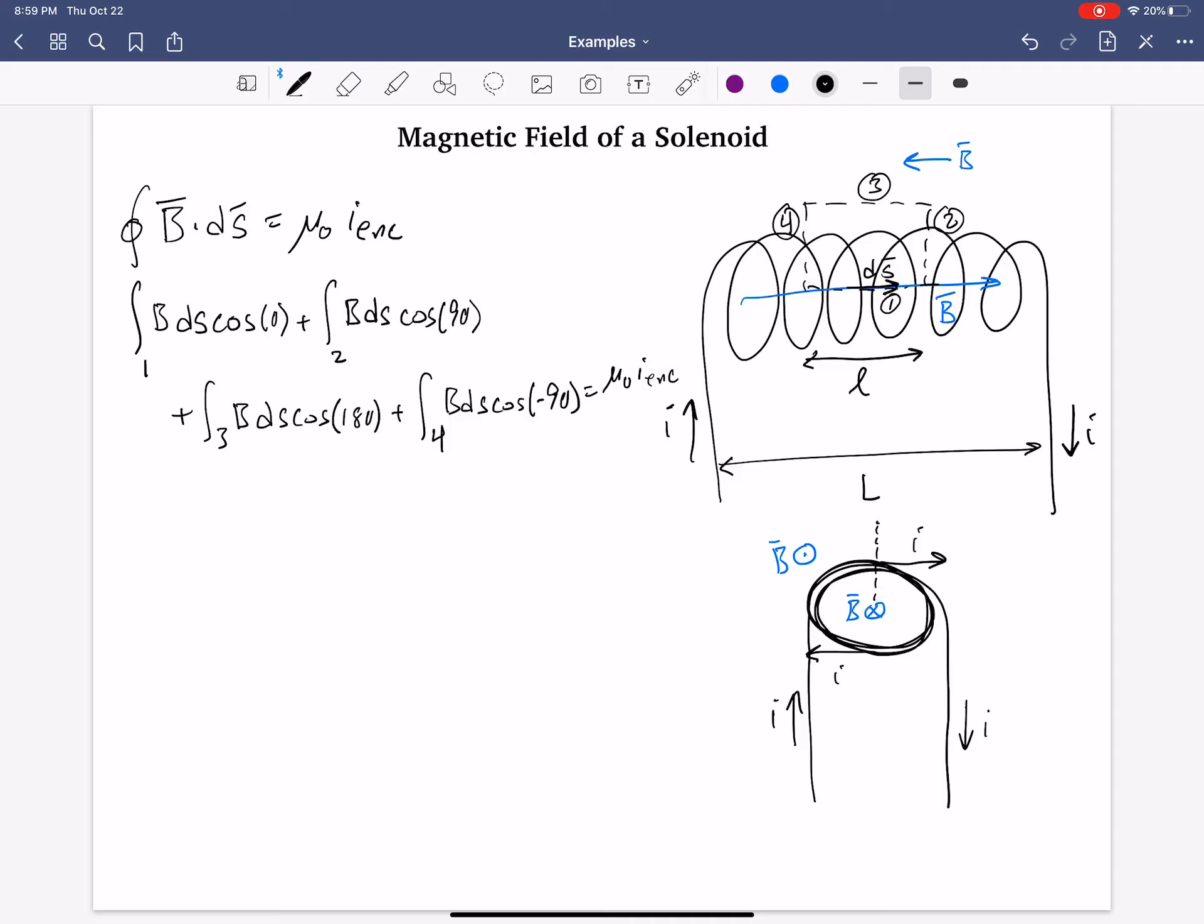So, which of these four terms on the left cancel out? Well, it's the ones that have cosine of plus or minus 90. So that's 0, that's 0.